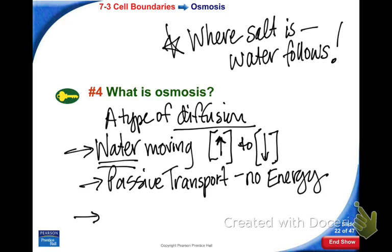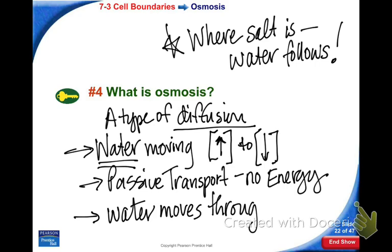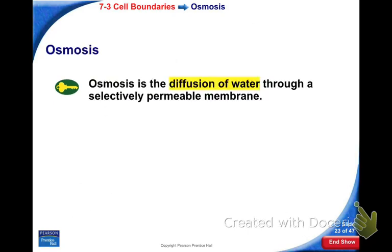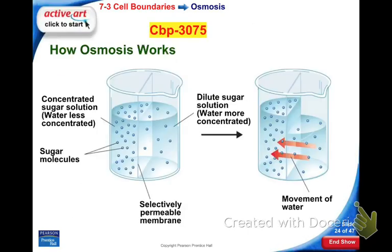It happens all by itself because you are moving from high concentration to low concentration. The third thing that makes osmosis different is that water is moving through a membrane — so we're going to have a membrane involved. Those are the things that make osmosis different from diffusion, but it's still a type of diffusion because we are going along the concentration gradient. Diffusion of water through a selectively permeable membrane.